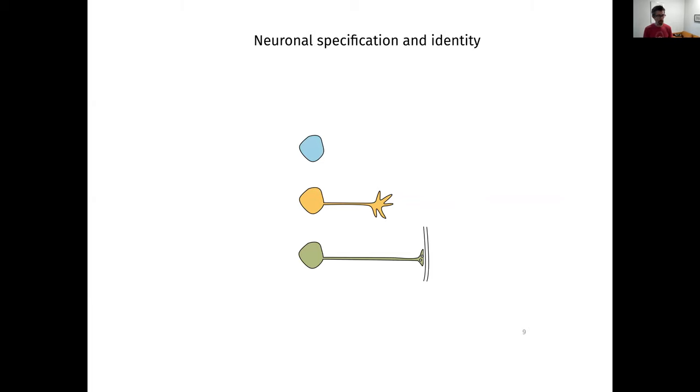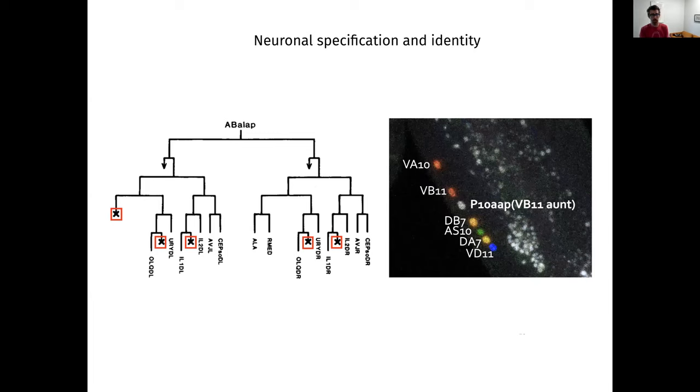So a third major arm of the lab is looking at neuronal specification and identity. So there's many, many, many different kinds of neurons and they are quite different from one another structurally and functionally. And so a major question in the field is how are neurons specified and how does that work? C. elegans is a great model for this and we can track the generation of every single individual neuron type through the lineage. And we have beautiful tools to look inside living animals and we can actually see every individual type of neuron and know which one it is.